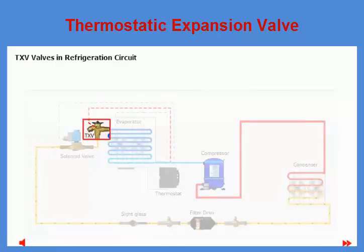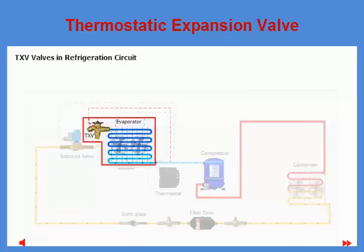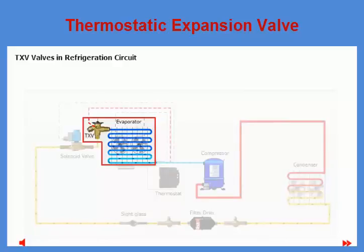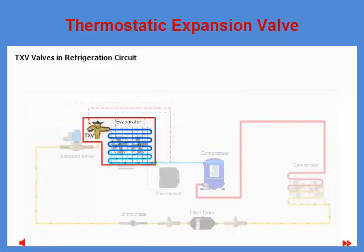Generally, TXVs are used to regulate the amount of refrigerant liquid being injected into the evaporator. They do this by controlling the refrigerant superheat at the evaporator outlet. As a consequence, these valves are especially suitable for liquid injection in so-called dry evaporators, where the superheat at the evaporator outlet is proportional to the evaporator load. Certain TXV versions can also be used to reduce the superheat on systems with capacity regulation performed by hot gas bypass valves.